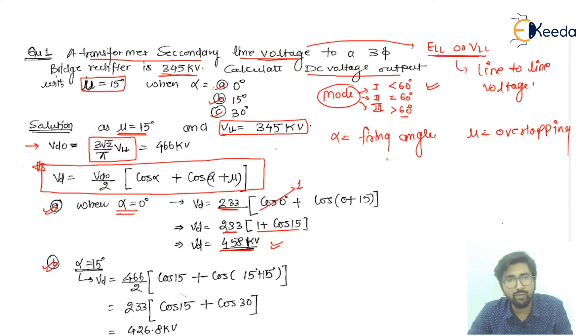Now if I talk about point number C, same thing: mu is equal to, which is given, mu is equal to 15 degrees. And if I talk about alpha, alpha is equal to 30 degrees. So when you put in this formula, you can get VD is equal to VD0 by 2, and this will be cos alpha plus cos(alpha plus mu), or you can say mu, that is the similar thing.